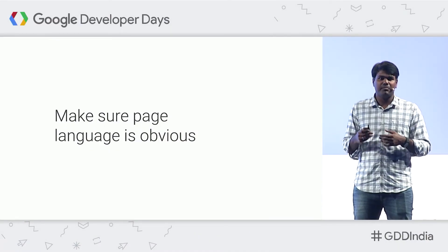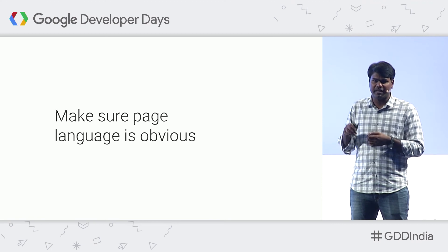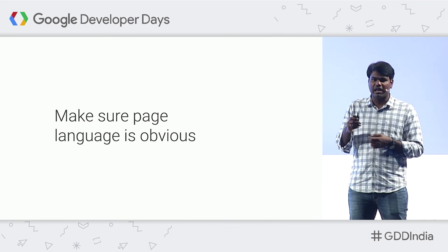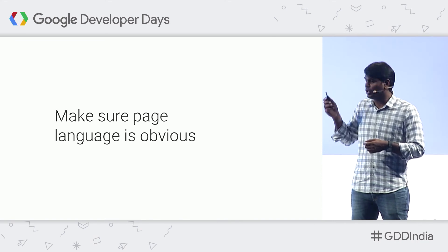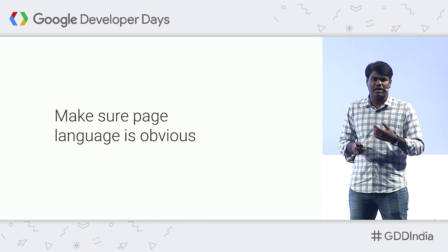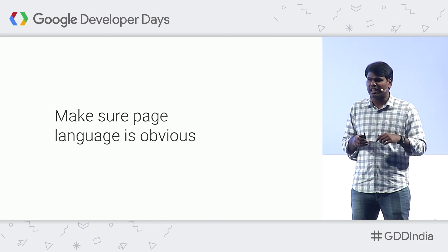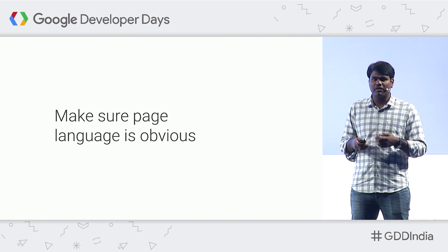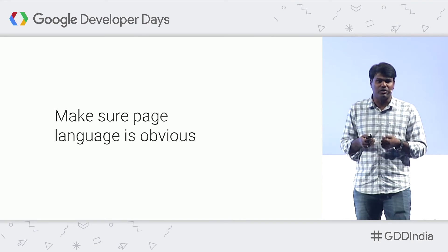This sounds obvious, but we've seen many cases where you have the Bangalore page in English, but in the Hindi page only the boilerplate template is translated while the actual content is not. Google doesn't use code-level attributes like lang to determine what language a page is — Google actually looks at the content and text of a page. So if your template is in one language and the content is in another, that makes it hard for Google to understand which language the page is, and it may show the page to the wrong audience.